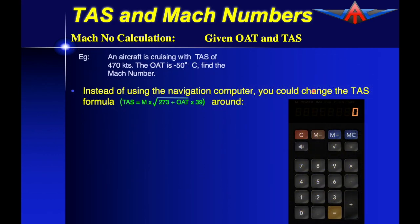We could also have done this using a calculator. If we use a calculator we have to change the TAS formula around and when we do that to get the Mach number we divide the TAS by the square root of the 273 plus the outside air temperature multiplied by 39.